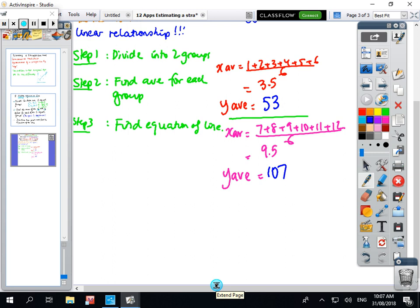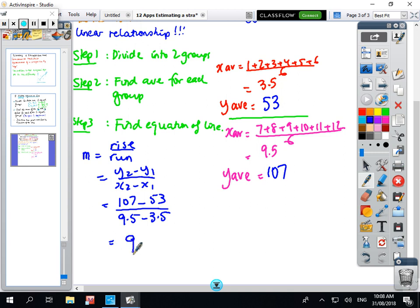So what we're going to do now is find the gradient. So the m is the rise over the run, so that's y2 minus y1 over x2 minus x1. So 107 is the second one and the first is 53 divided by the second was 9.5 and the first was 3.5. So do that calculation on your calculator and see what you get. Okay you should have got 9.